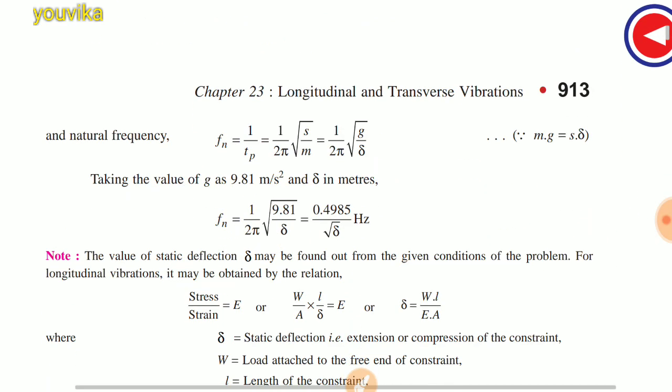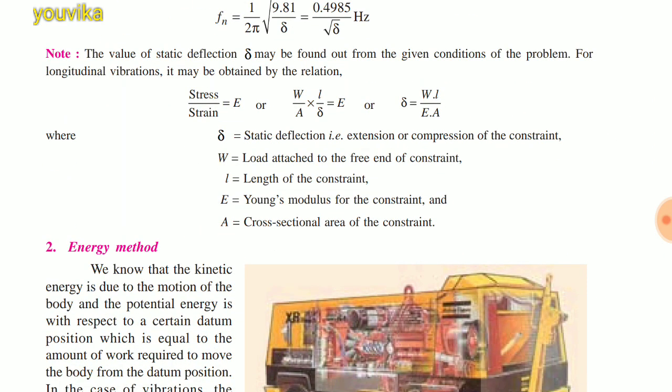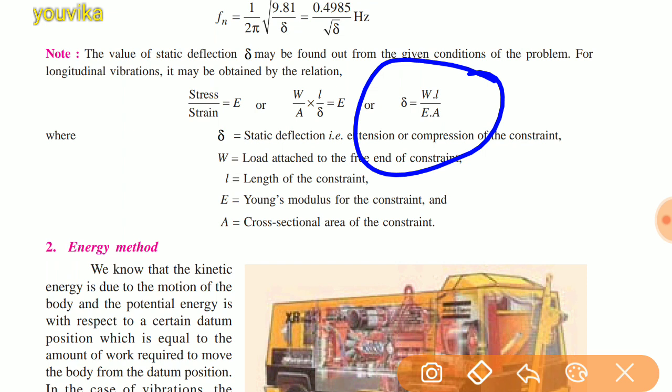Delta is equal to WL/AE — this formula is used for natural frequency. This is the introduction part. In the next class, we will see some problems. Thank you.